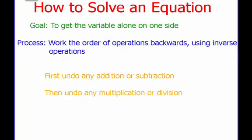Our procedure for solving an equation goes like this. Our goal is to get the variable alone on one side — that's called isolating the variable. Here's our process: we're going to work the order of operations backwards using inverse operations. First, we're going to undo any addition or subtraction that we see. And then we're going to undo any multiplying or dividing that we see.